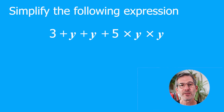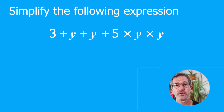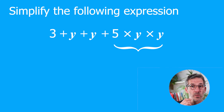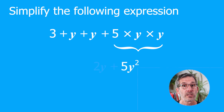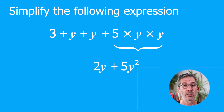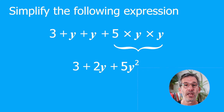Final question: simplify 3 + Y + Y + 5 × Y × Y. We must carry out the multiplication first — 5 × Y × Y = 5Y². Then the addition: Y + Y = 2Y, and we have the 3 on its own. So the whole thing simplified is 3 + 2Y + 5Y².